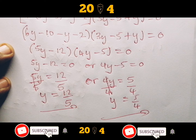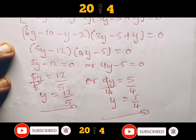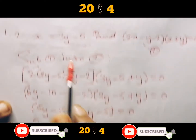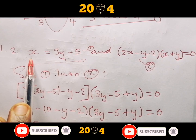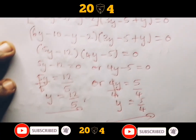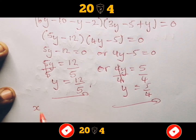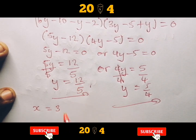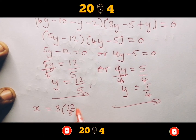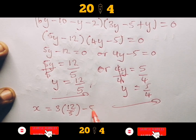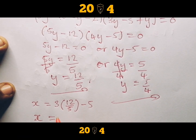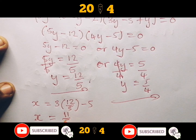Now that we have our Y values, the next move is to find X. Substitute each Y value back into equation one (X equals 3Y minus 5). For Y equals 12 over 5: X equals 3 times (12 over 5) minus 5, which gives X equals 11 over 5. Then substitute Y equals 5 over 4 similarly to get the second X value.